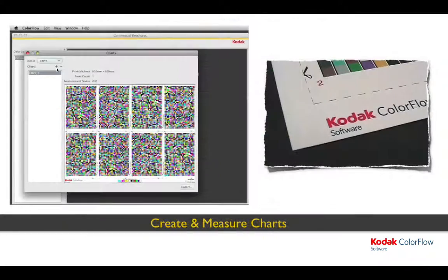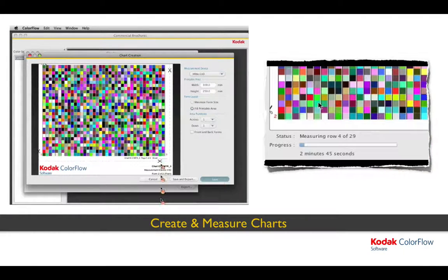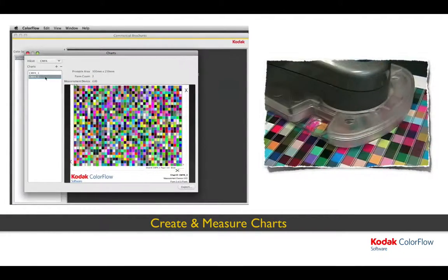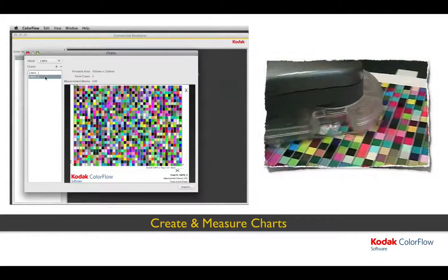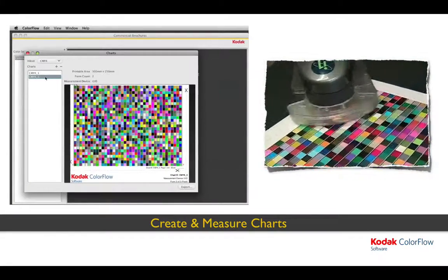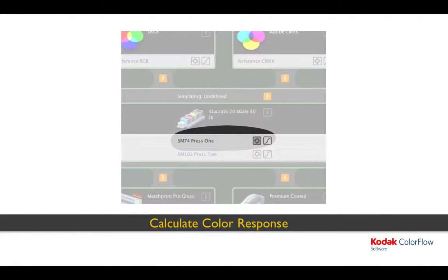ColorFlow software includes an extensive chart creator, providing you with in-position ready charts, suitably sized and sectioned for the combination of your device's sheet sizes as well as the page size of your measuring device. Printed charts can be measured on a variety of devices, and for charts created with ColorFlow software, comprehensive error checking and quality control ensure that your measurements are accurate. Once your device condition is defined and your charts are measured, ColorFlow can calculate the color response of that device in that device condition. Color response is key to ColorFlow's ability to automatically calculate press curves and ICC profiles, as capturing both tonal and colorimetric values maximizes ColorFlow's ability to generate optimal curves and profiles.